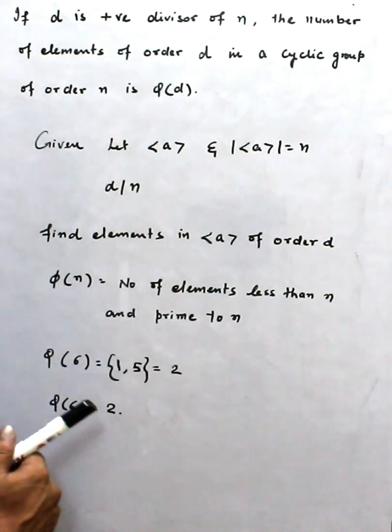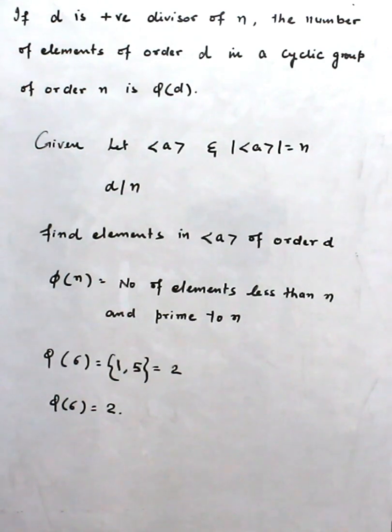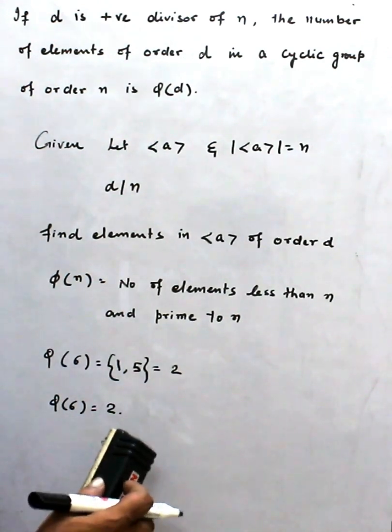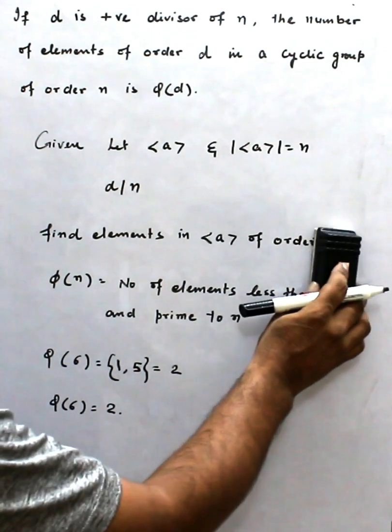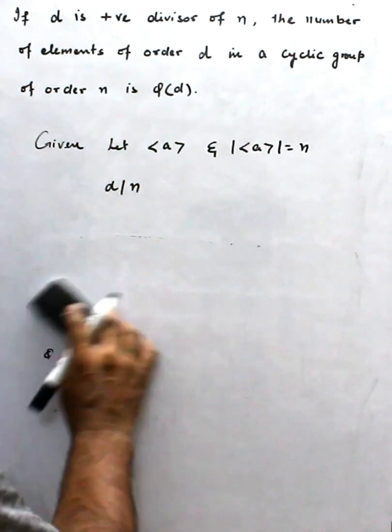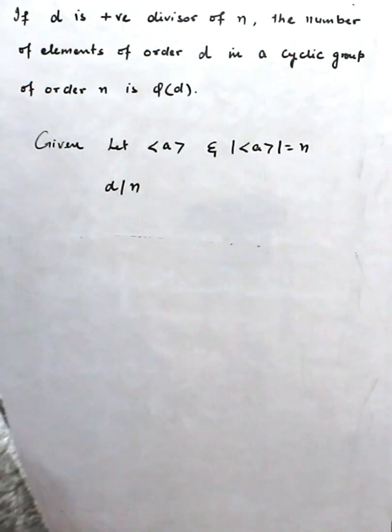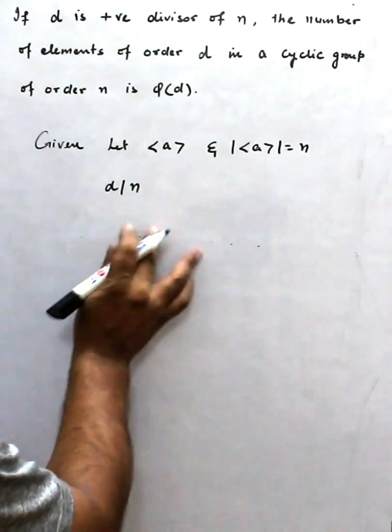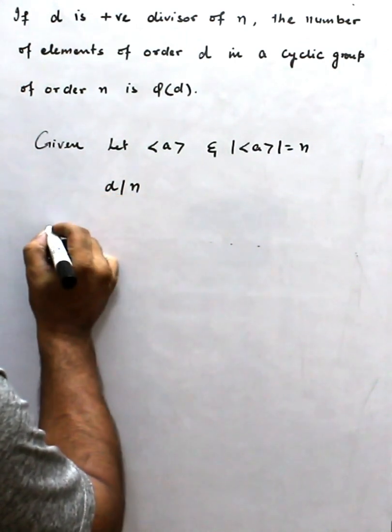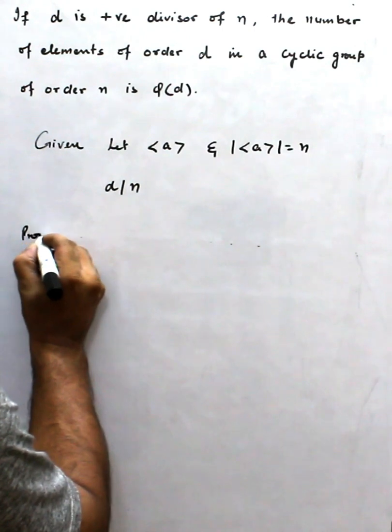Now we find the elements which have order d. Now we know, proof: if d divides n...